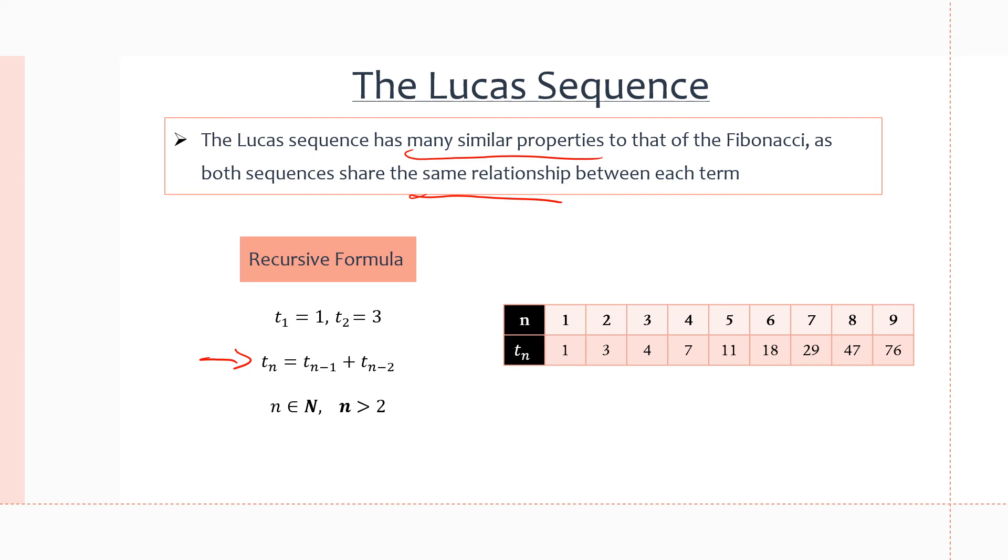The Lucas sequence also relies on the previous two terms to calculate the next term. The only difference is that the first two terms of the Lucas sequence are 1 and 3. And again, n has to be greater than 2 because we don't want a t of 0. But it's actually the exact same relationship, but just different beginning terms, which changes the sequence completely.